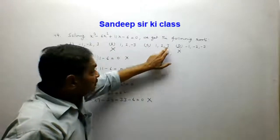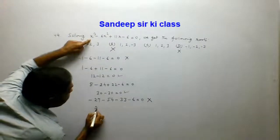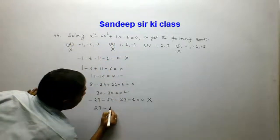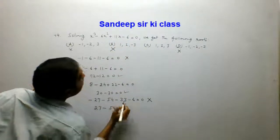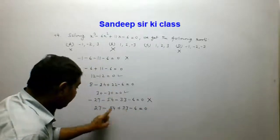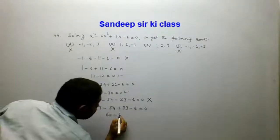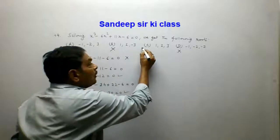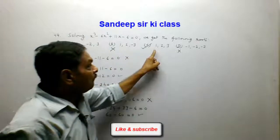Testing x = 3: 3³ - 6(3²) + 11(3) - 6 = 27 - 54 + 33 - 6. This gives 27 + 33 = 60 and 54 + 6 = 60, so 60 - 60 = 0. So x = 3 satisfies the equation. Therefore option C is correct, and the three roots of the cubic equation are 1, 2, and 3.